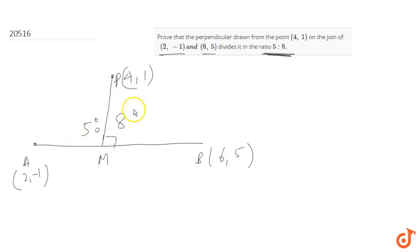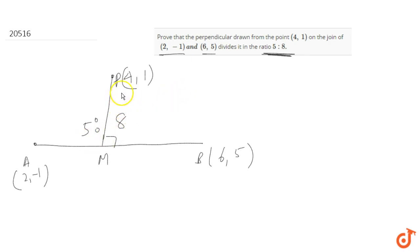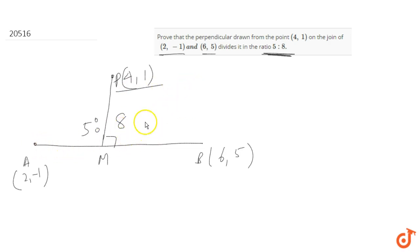How do we prove this kind of problem? The first approach should be to find the equation of AB. If we find the equation of AB, then PM will be perpendicular to AB. We know that when two lines are perpendicular to each other, the product of their slopes is minus one. This way we will get the slope of PM, and if we have point P and the slope, we can easily find the equation of PM.